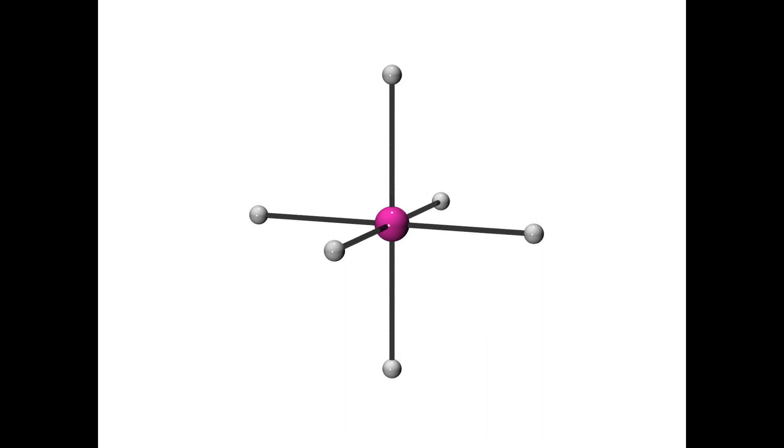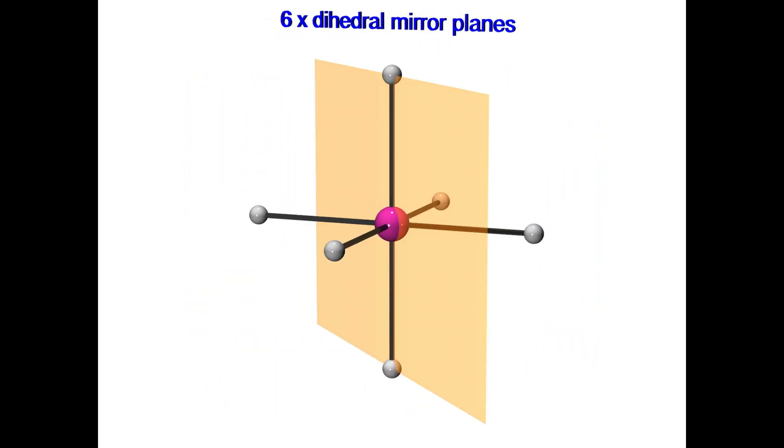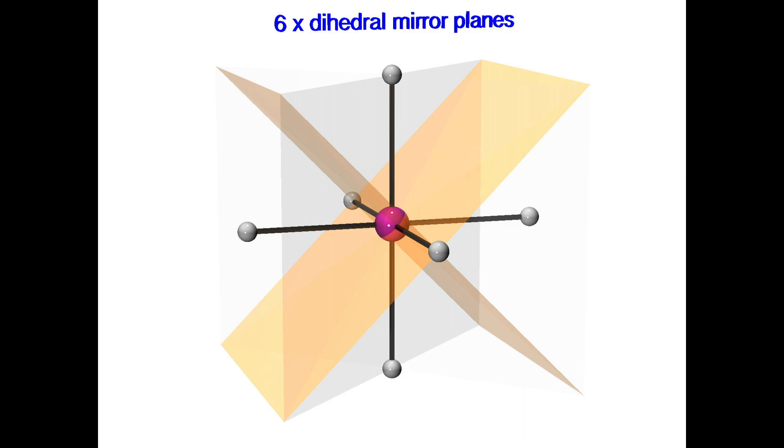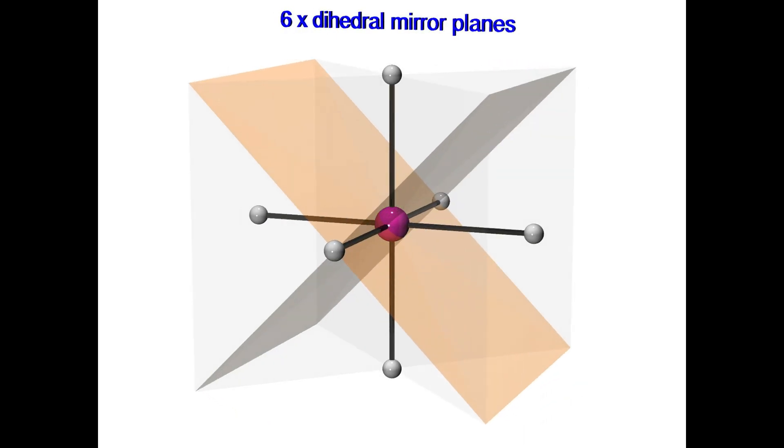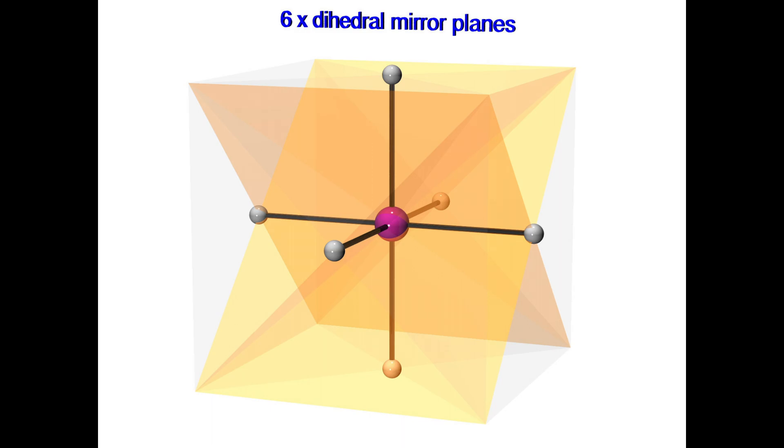All the other mirror planes in the octahedral point group are dihedral mirror planes. These mirror planes extend along the principal axes. Two atoms on one side of the molecule are related by reflection to two atoms on the other side of the molecule. There are two dihedral mirror planes extending along each of the three principal axes for a total of six. So that's all the mirror planes.